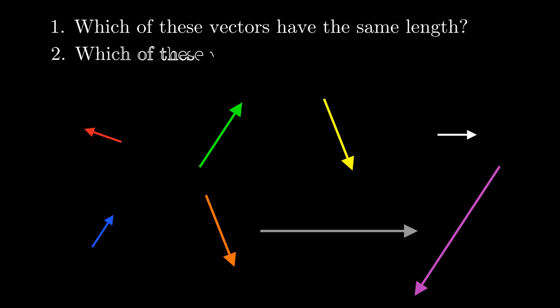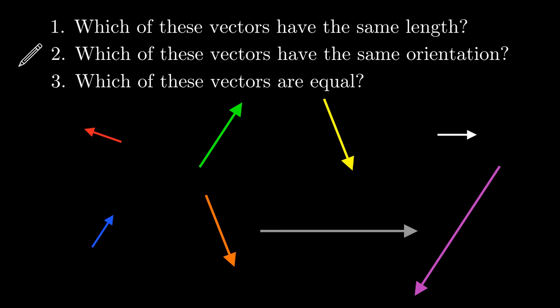Before we move on, let's do an exercise to make sure you understand everything so far. Here are a bunch of vectors. Let's ask three questions. Which of these vectors have the same length? Which of these vectors have the same orientation? And finally, which of these vectors are equal? Please pause the video and answer these questions before continuing.